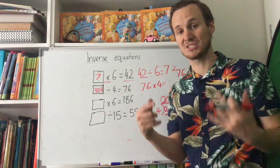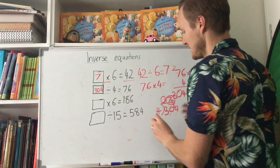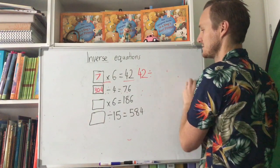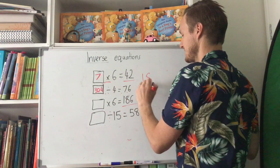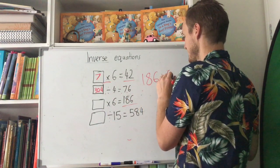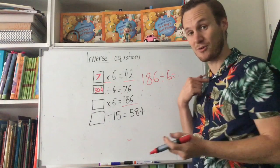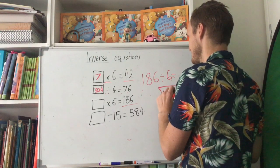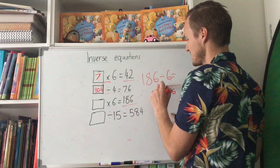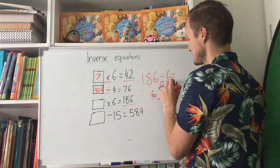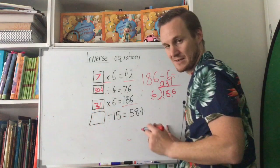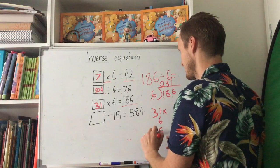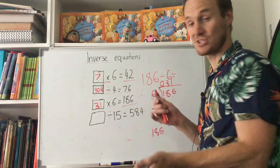Next one: something times 6 equals 186. Start with the answer 186, change to divide: 186 divided by 6. 6 goes into 18 three times, 6 goes into 6 once — that gives us 31. Let's check: 31 times 6 — 6 times 1 is 6, 6 times 3 is 18. All checks out. Always double-check so you don't make a silly mistake that costs you marks.